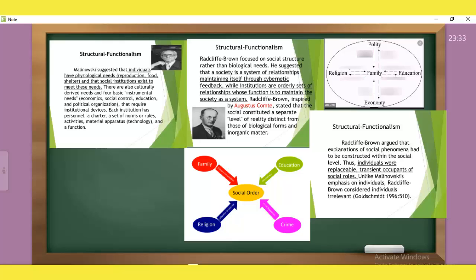Redcliffe Brown: social structure, social structure more important than biological needs. Society's own system of relationships which are cybernetically connected with feedback. Institutions, set of relationships which work to maintain society. It's a separate level of reality distinct from biological forms and inorganic matter. Society's own separate entity. So Redcliffe Brown's argument was that social phenomena has to be constructed within the social level.